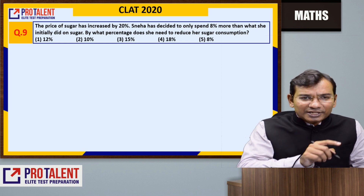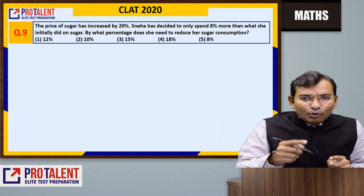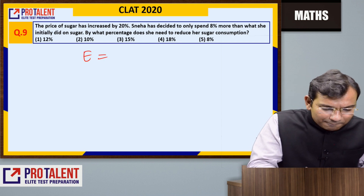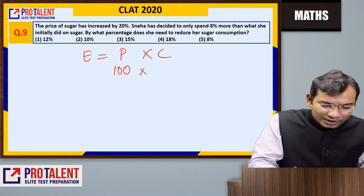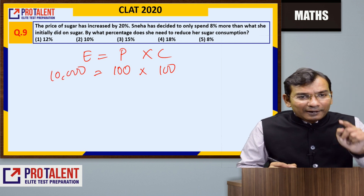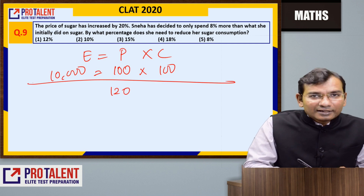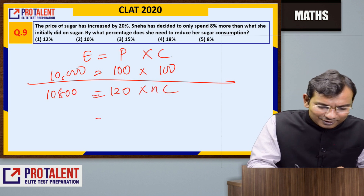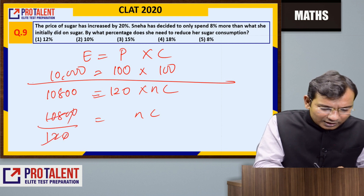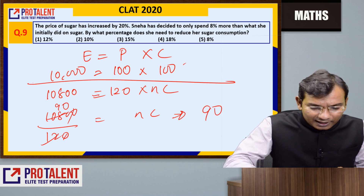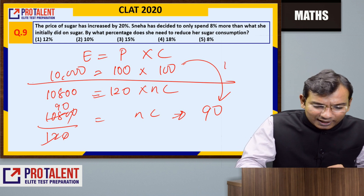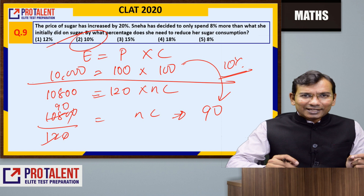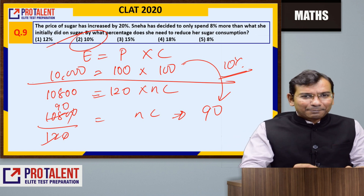Number 9: Price of sugar increased by 20%. Sneha decided to spend only 8% more than before. By what percentage does she need to reduce her consumption? Using E = P × C with base 100×100 = 10,000. New price = 120, new expenditure = 10,800. New consumption = 10,800 / 120 = 90. Original was 100, so consumption decreased by 10%. Answer is 10%.